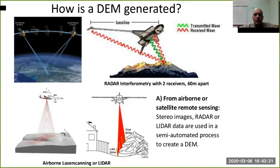There are mainly two different kinds of data acquisition for digital elevation models. The first one is by radar — there is a scattering process of radar waves.